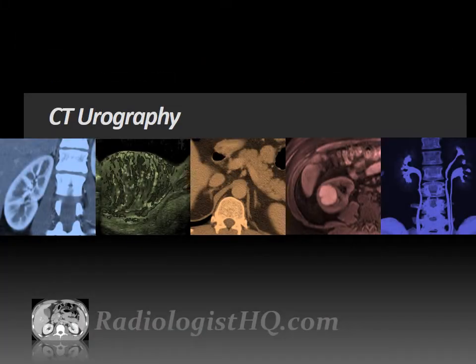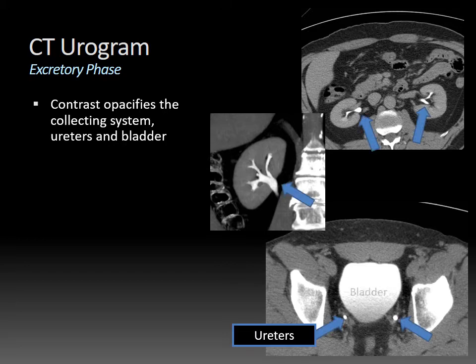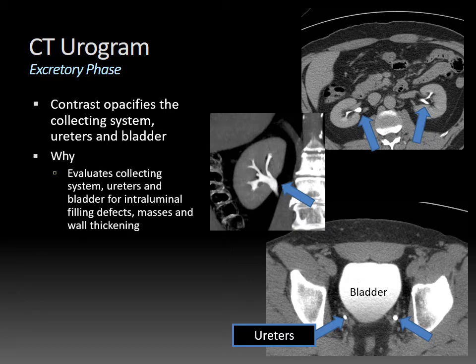The most important phase of the CT urogram is the excretory phase, and that's when contrast opacifies the collecting system, ureters, and bladder, as in this case. With this phase, we can identify any filling defects in the collecting system, ureters, and bladder, as well as detect neoplastic masses and areas of wall thickening. Note the patient is in the prone position, which can help distend the ureters and gives information about mobility of any filling defects you may discover.